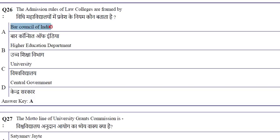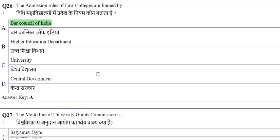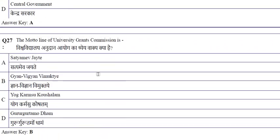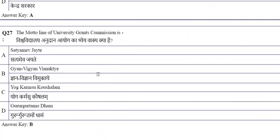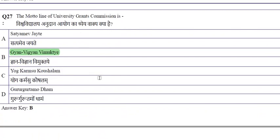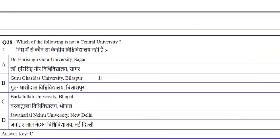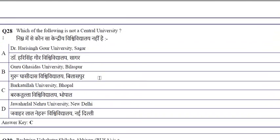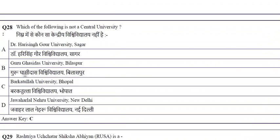The motto of the University Grants Commission is 'Gyan Vigyan Vimukte.' Barkatullah University is not a central university — it is a state university. RUSA (Rashtriya Uchchatar Shiksha Abhiyan) is a centrally sponsored scheme.